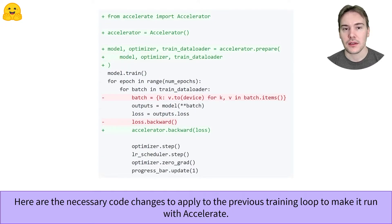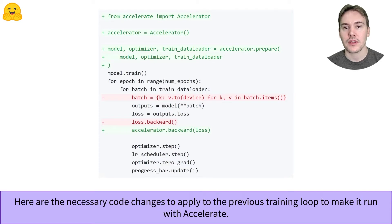More specifically, you have to import and instantiate an Accelerator object that will handle all the necessary code for your specific setup. Then, you have to send it the model, optimizer, and data loaders you're using in the prepare method — this is the main method to remember. Accelerate handles device placement, so you don't need to put your batch on the specific device you're using. Finally, you have to replace the loss.backward line by accelerator.backward(loss). And that's all you need.